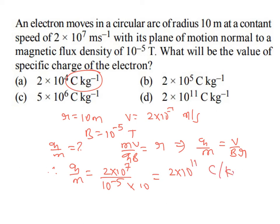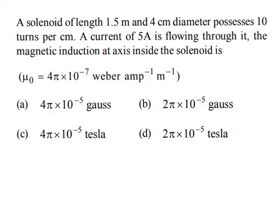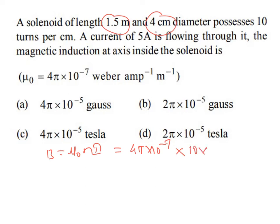Next problem: a solenoid of length 1.5 m and 4 cm diameter has 10 turns per centimeter carrying 5 ampere. The length and diameter are not required since the magnetic field B = μ₀nI is independent of them. B = 4π×10⁻⁷ × 10³ × 5 = 2π×10⁻⁵ tesla. Option D is the right answer.